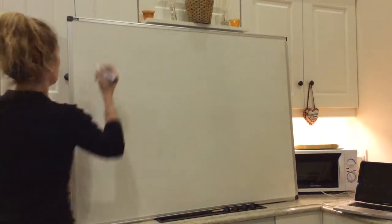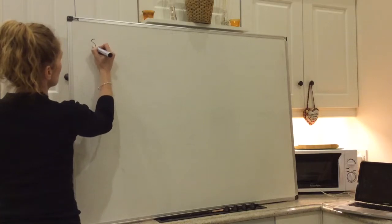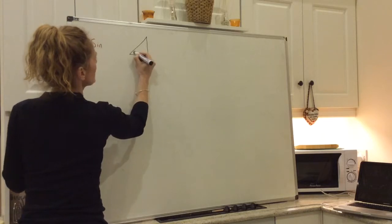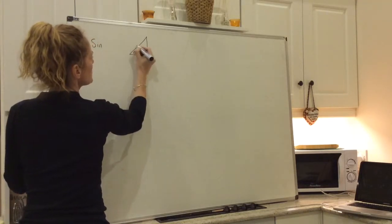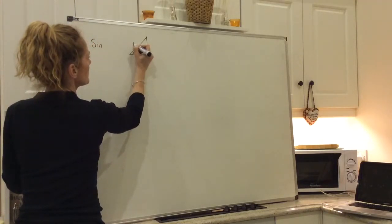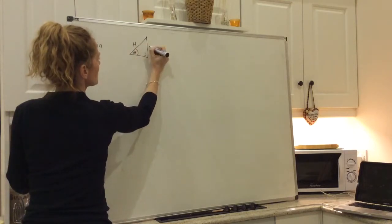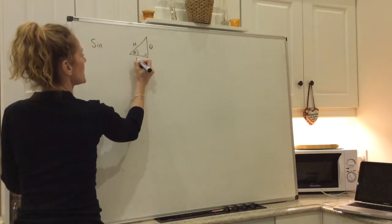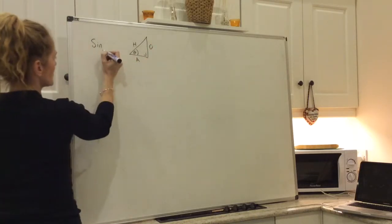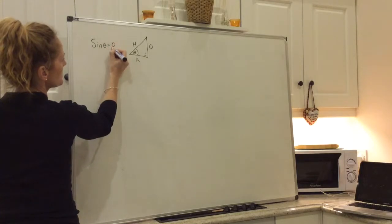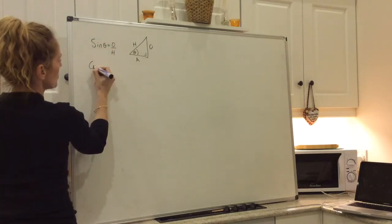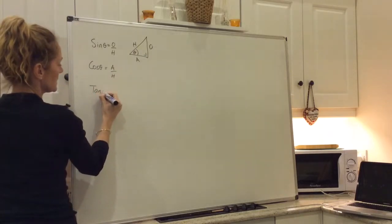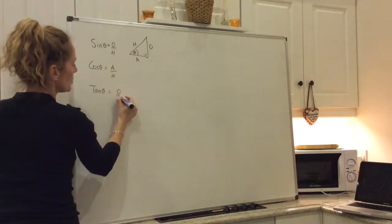Okay, trigonometry two. The first thing — a reminder that you have a triangle here, right-angled. This is theta. My opposite, my right angle is my hypotenuse side. Opposite the angle itself is called the opposite, and the adjacent side. And we know that sine theta is opposite over hypotenuse, cosine theta is adjacent over hypotenuse, and tan theta is opposite over adjacent.